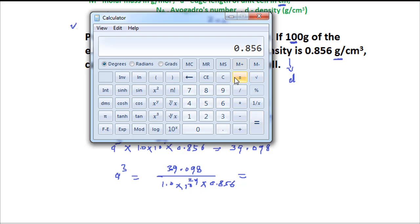The value which we get, same value is there. And we divide the top value that is 39.098, and it is divided by the bottom value that is 0.856. The value which we get is 45.